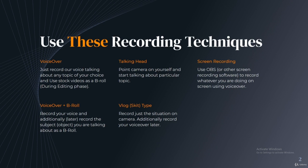For voiceovers, just record your voice talking about any topic of your choice and use stock videos as b-roll — that's the editing phase. Voiceover and voiceover plus b-roll are very similar to each other. Additionally, you can record the subjects or objects you're talking about as b-roll. In the first case we use stock b-roll found online; in the second case we specifically record it ourselves. They're practically the same 95% of the time.